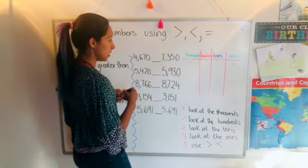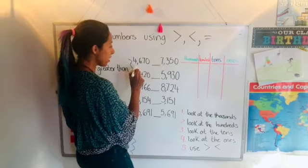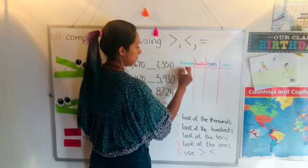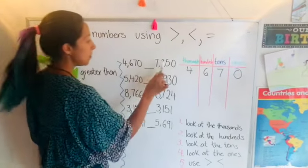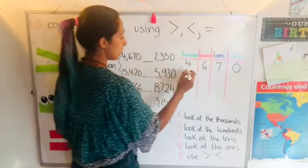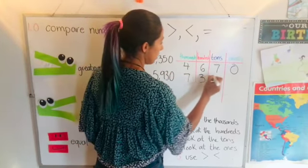So I'm going to use my place value chart and I'm going to write 4670, 4670, and my other number 7350.